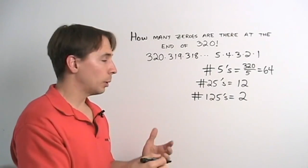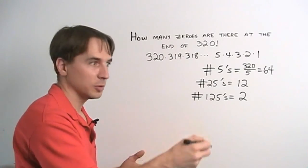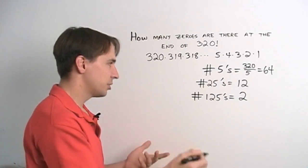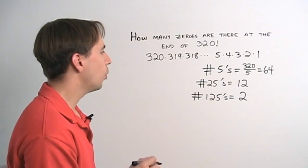And then four, we have to worry about four factors of 5 in a single number. Well, the first one there is 5 times 5 times 5 times 5. It's 25 squared, 625. That's way outside this list. So we don't have to worry about any more.